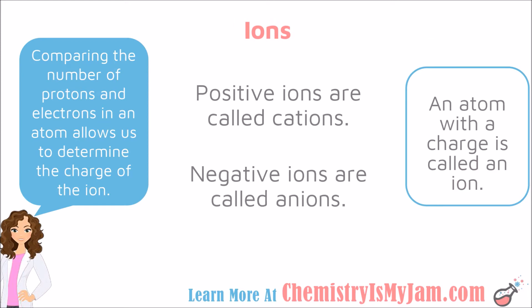What happens if the number of protons does not match the number of electrons? At that point, you have an atom with a charge, which we call an ion. Comparing the number of protons and electrons helps us determine whether it is a positive or negative ion. If there are more protons present, then it is positive, and we call it a cation. If there are more electrons present than protons, then it has an overall negative charge, and we call it an anion. So positive ions are called cations, and negative ions are called anions.